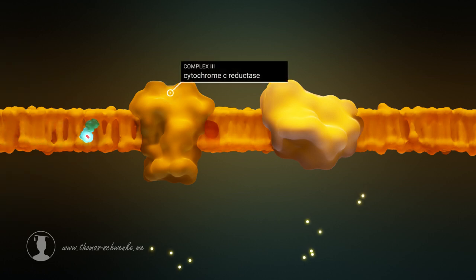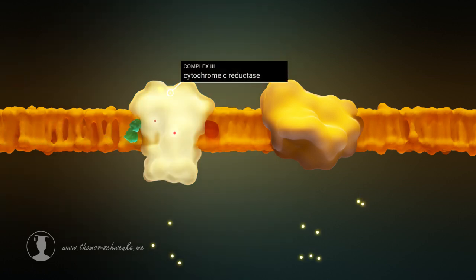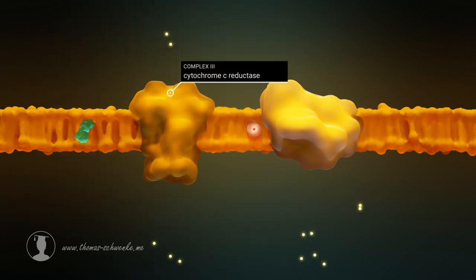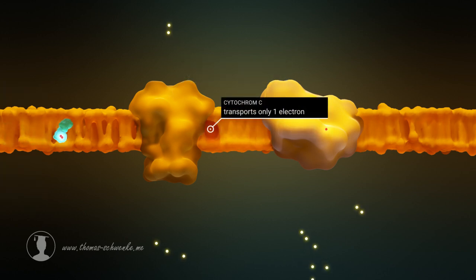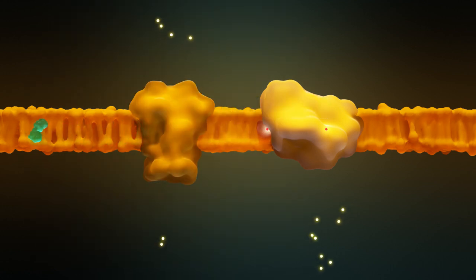Coenzyme Q10, which has taken up the electrons, transports the electrons to the third complex. The reactions that take place cause an electron to be transferred to cytochrome C. In addition, one proton is removed from the matrix. Two protons are released into the intermembrane space.